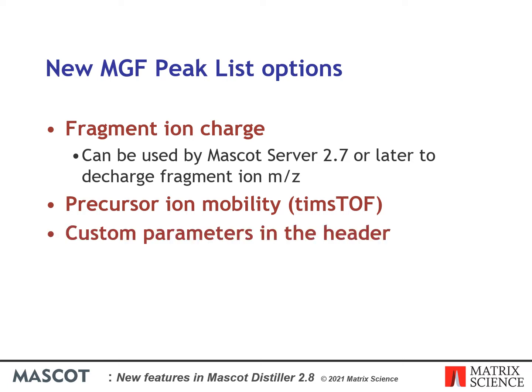You can also add custom parameters to the MGF header. These can include search options such as options controlling variable modification permutation added in Mascot Server 2.7, or your own custom parameters which will be passed through to the results.dat file after searching. These can be used for embedding useful metadata into the results.